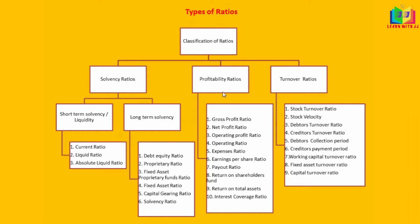In this video, we will see profitability ratios. Under profitability ratios, you have 10 ratios. In this video we will see a few ratios among them, and in our next video we will see the other ratios. This is the turnover ratio section — under turnover we have 9 ratios, which we will see in our upcoming videos.